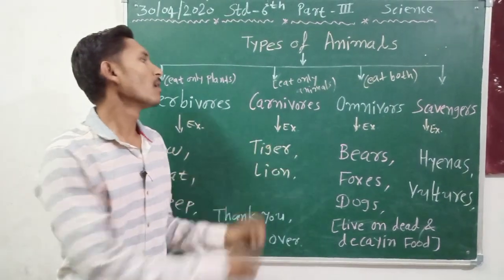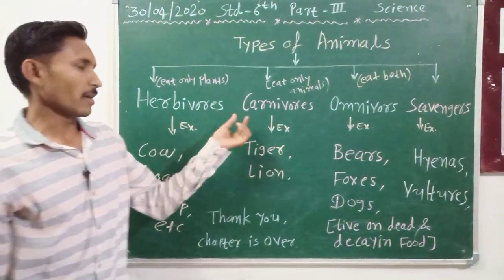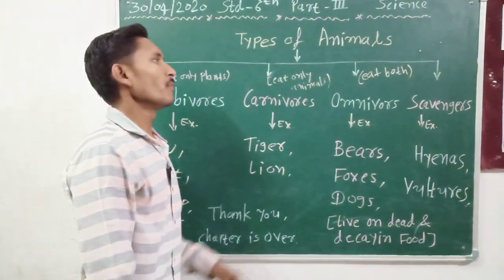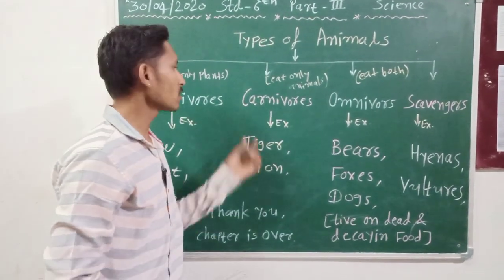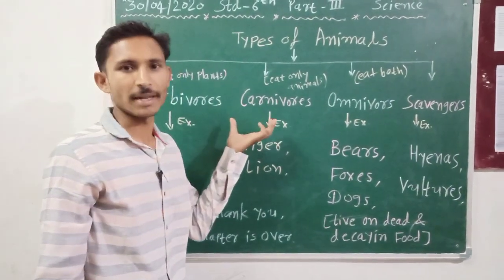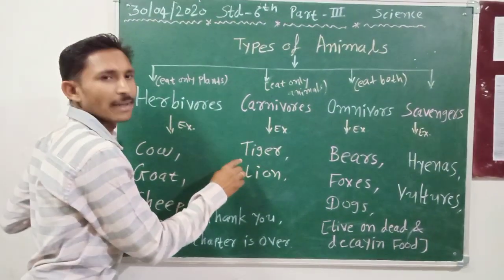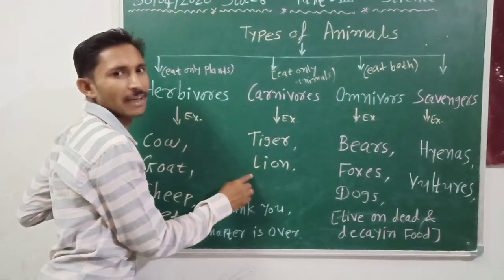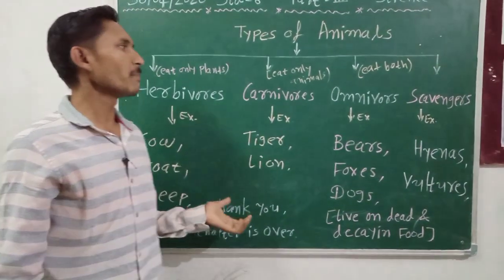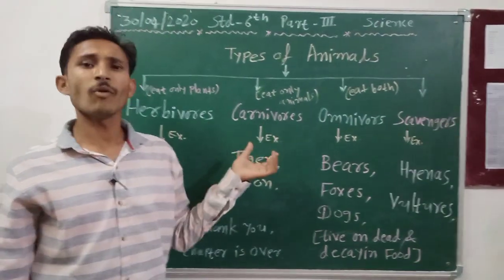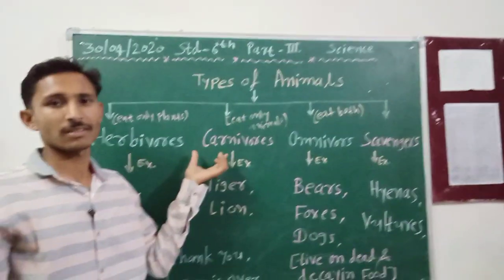Second type of animal: carnivores. Animals which eat only other animals are called carnivores. For example, tiger, lion, leopard — these animals eat only other animals. This is called a carnivore animal.